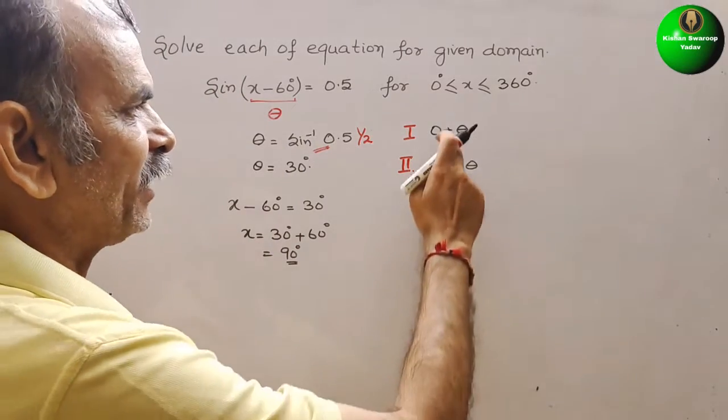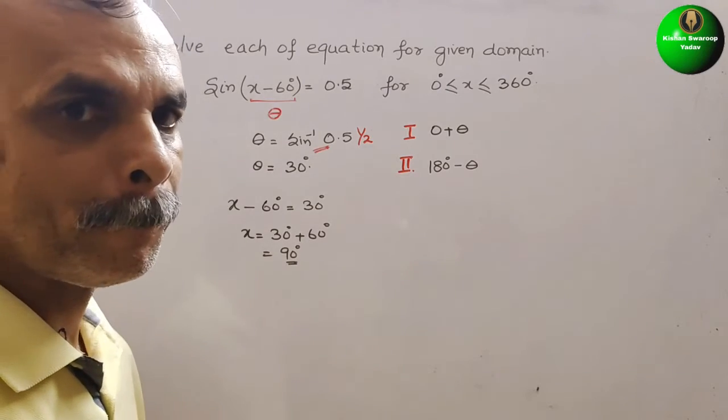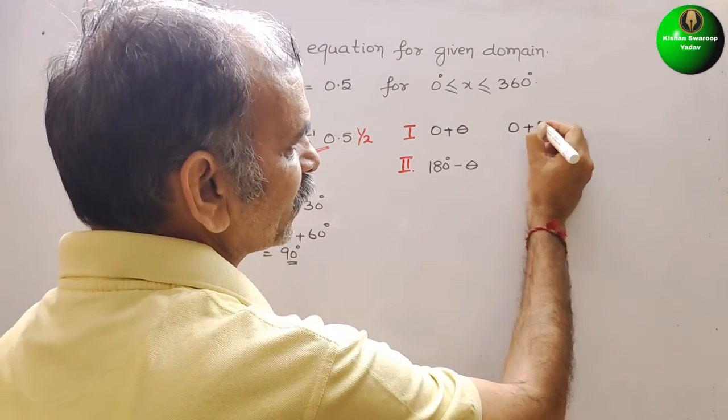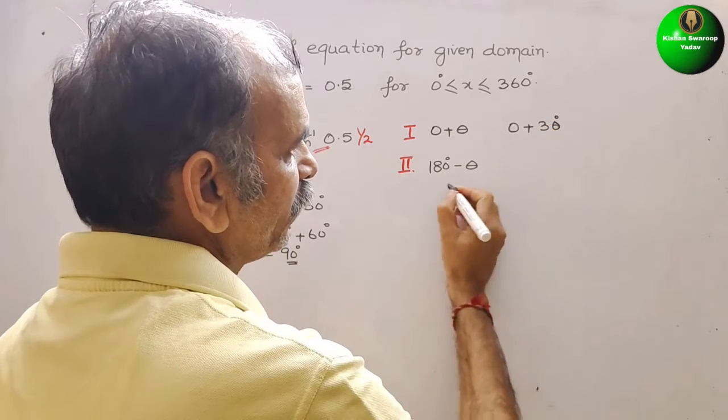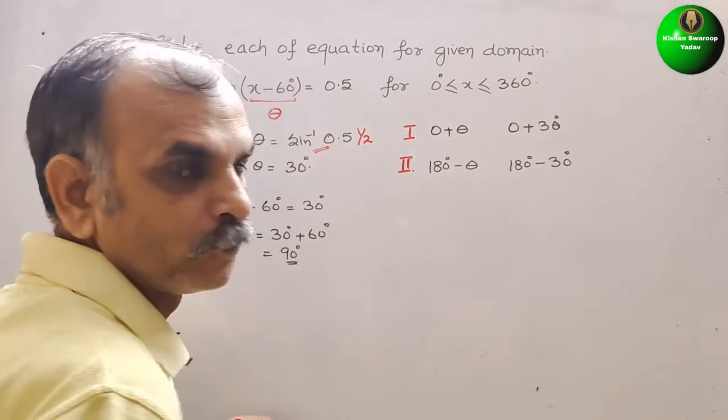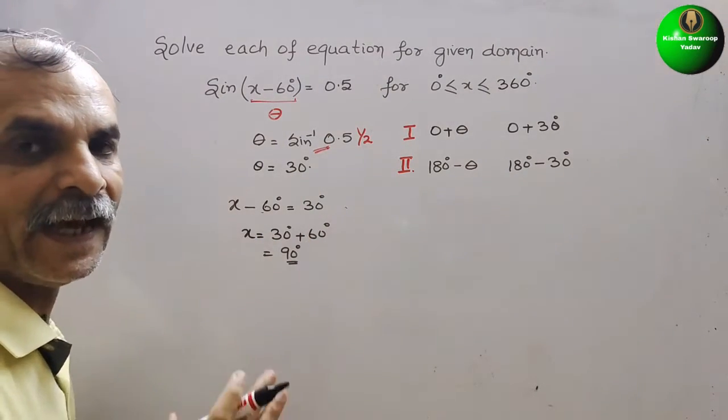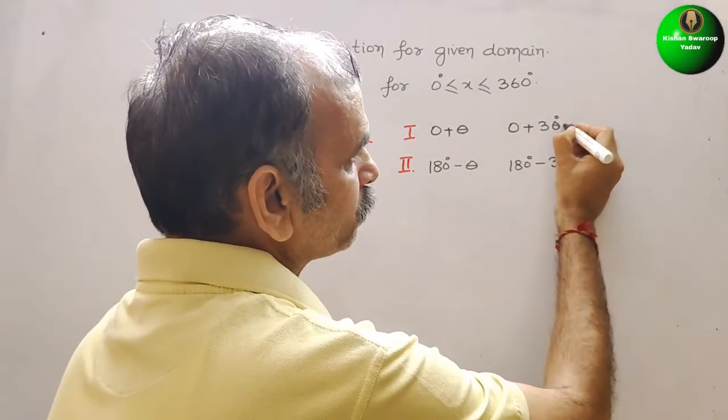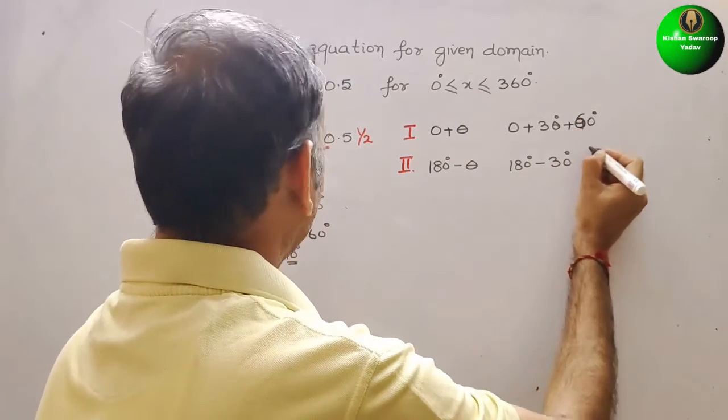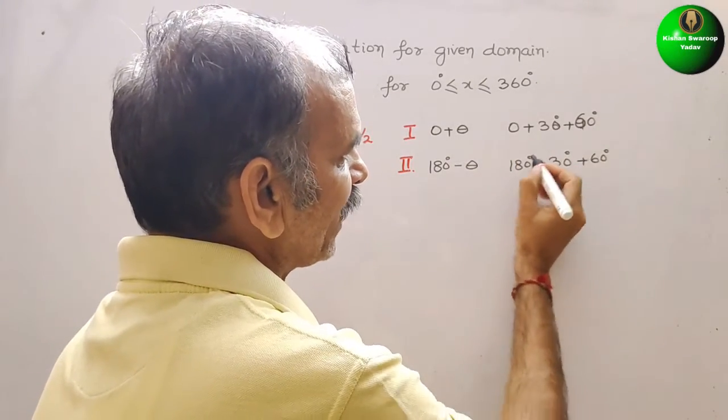Now substitute the value of theta here. What we will get? Theta is 30 degrees, so here we can write it as 0 plus 30 degrees, and here 180 degrees minus 30 degrees. Next, see this minus 60 will come towards the right as plus 60 at both sides. So here it is plus 60 degrees and here it is again plus 60 degrees.